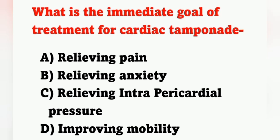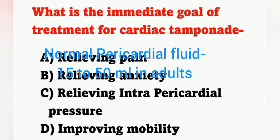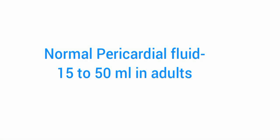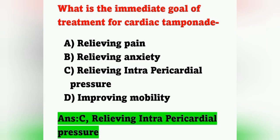Next question: what is the immediate goal of treatment for cardiac tamponade? Options: A) Relieving pain, B) Relieving anxiety, C) Relieving intrapericardial pressure, D) Improving mobility. Cardiac tamponade is accumulation of fluid in the pericardial space; normal pericardial fluid is 15 to 50 ml in adults. The immediate goal is to relieve the pressure. Option C, relieving intrapericardial pressure, is the correct answer.